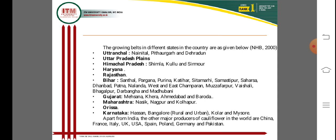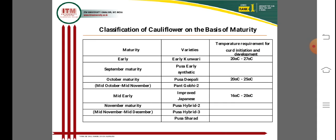Other major cauliflower-producing countries in the world include China, France, Italy, the US, UK, Spain, Ireland, Germany, and Pakistan. The Mediterranean region remains important as the origin place of cauliflower, and it continues to be a leading area for cauliflower cultivation worldwide.